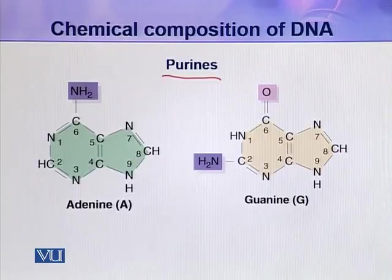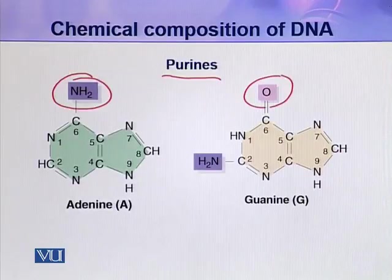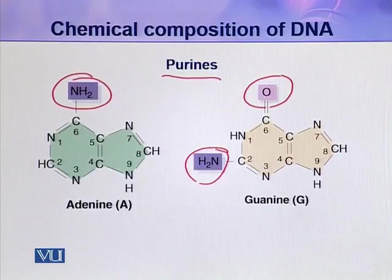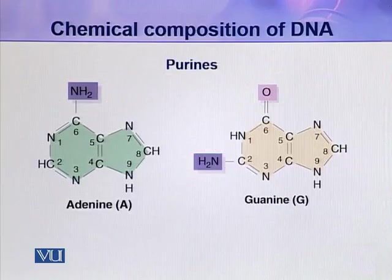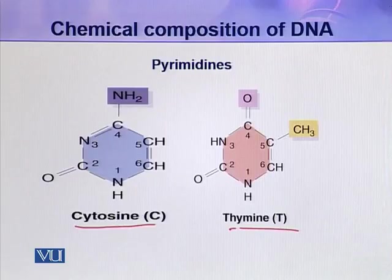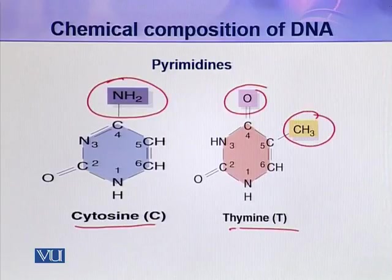Looking at the structures, there are only minor differences between adenine and guanine. The bases are conventionally numbered, but no prime designation is given, to distinguish them from the numbered atoms in the pentose sugar. The next two nitrogenous bases are pyrimidines — cytosine and thymine — which are also slightly different from each other and are derivatives of pyrimidine.